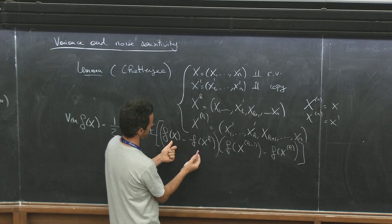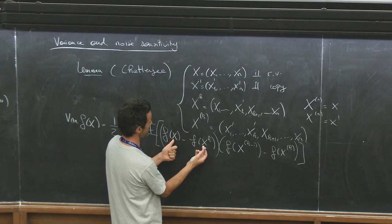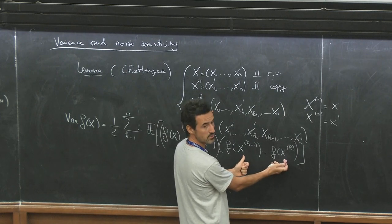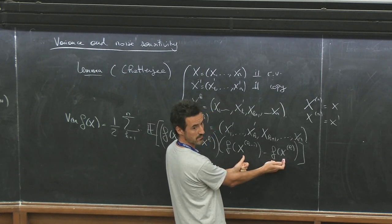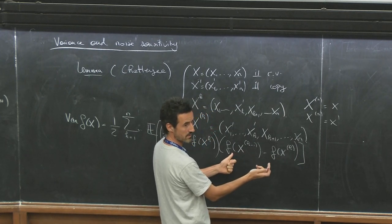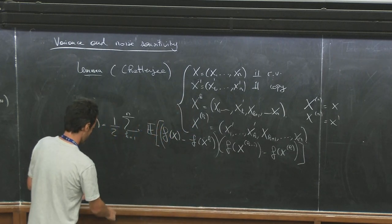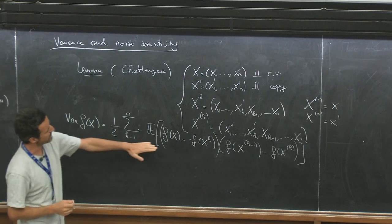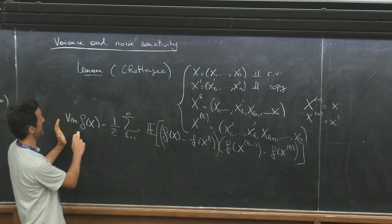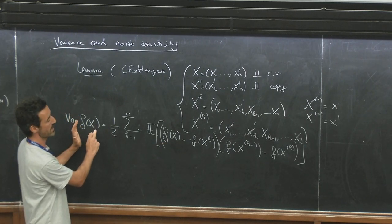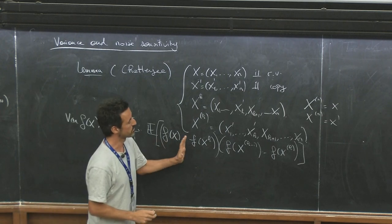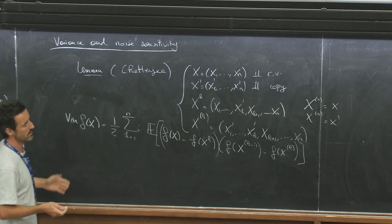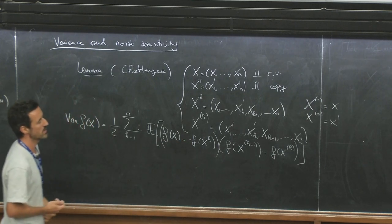The lemma of Chatterjee with this notation is that you can write exactly the variance of any function: the variance of f(x) is exactly equal to the sum from k=1 to n of the expectation of [f(x^{(k)}) - f(x^{(k-1)})] times [f(x^{(k)}) - f(x^{(k-1)})]. Here the two vectors in each term differ by only one coordinate — the k-th coordinate. It's an equality, so it's not very difficult to prove, but it's a very nice identity. From this you can also write the covariance of f and g, and deduce in one line the FKG inequality and the Efron-Stein inequality.